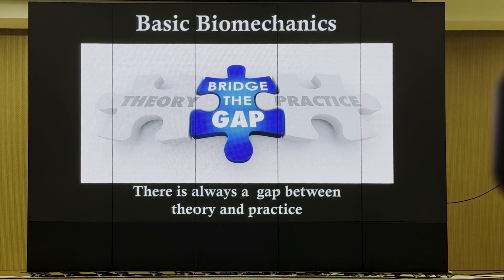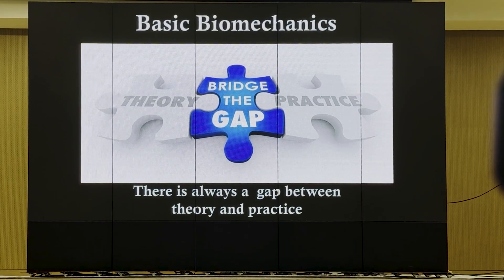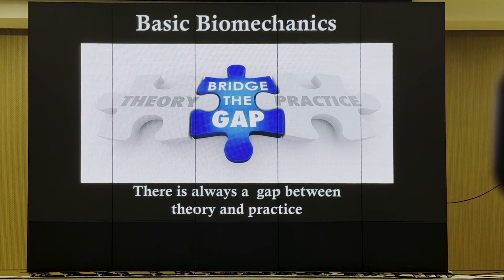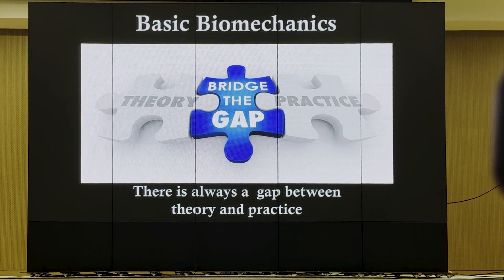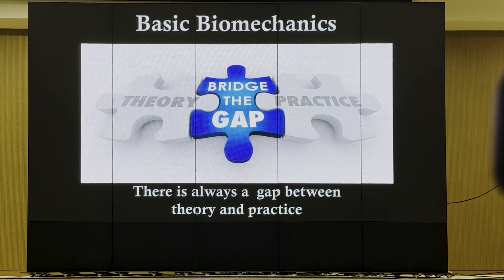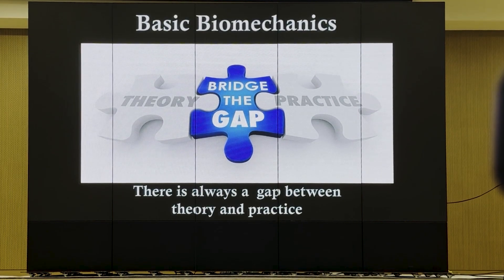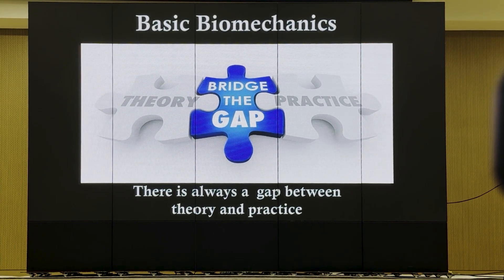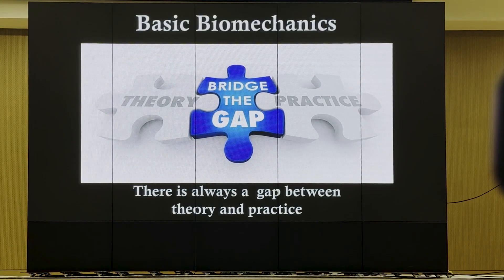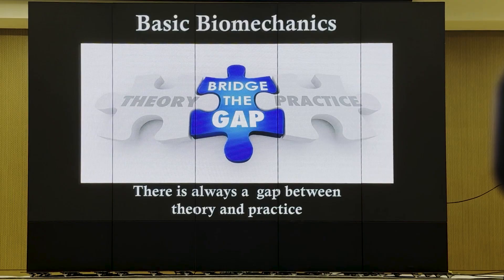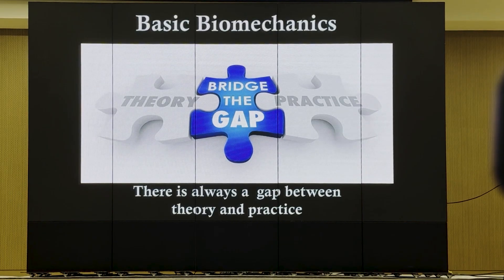So there's always a gap between theory and practice. There's a very large gap in between. Suppose all the movement of objects on earth is described by Newton's second law, which is very simple: F equals MA. Can you predict everything? No way. Because there are friction, there are so many factors acting on it. So even if the principle is very simple, but to apply it into the real world, there are so many gaps between theory and practice.